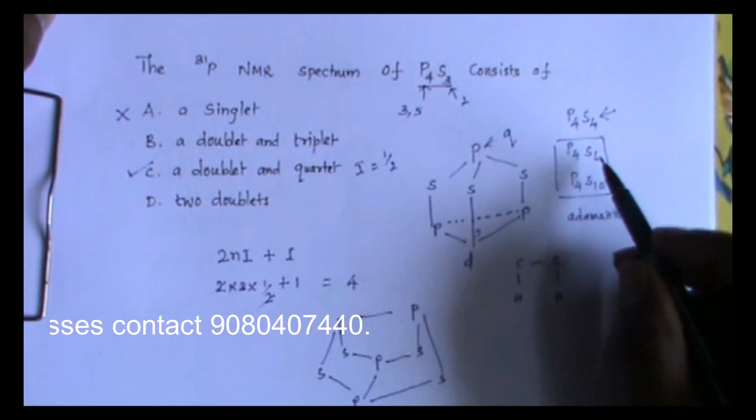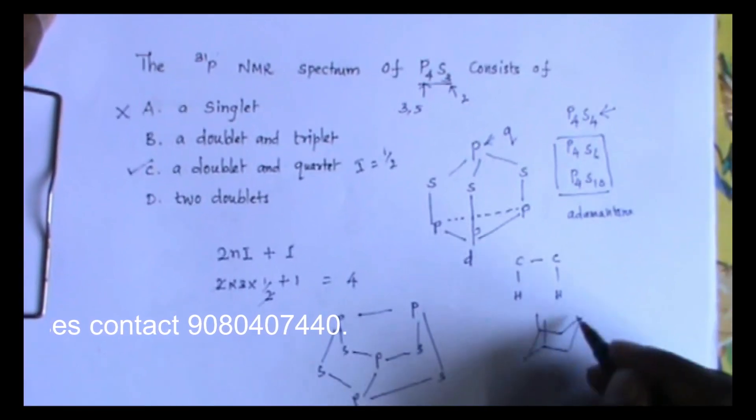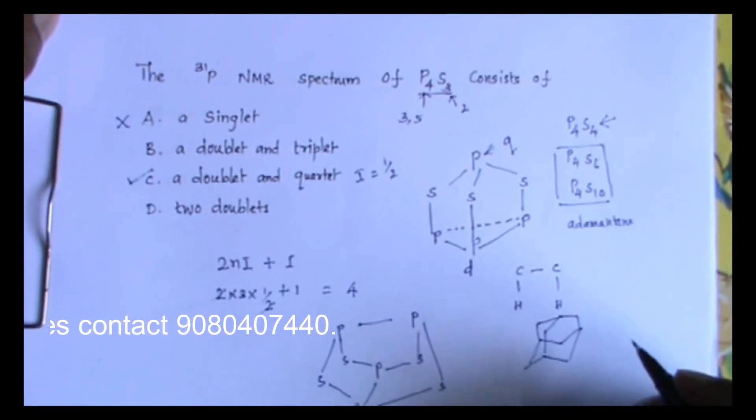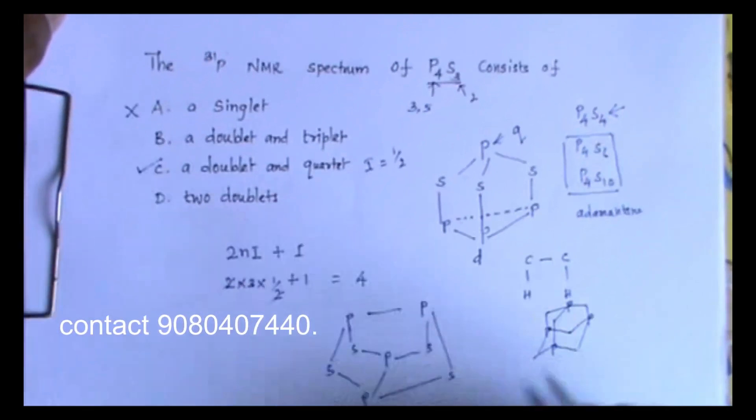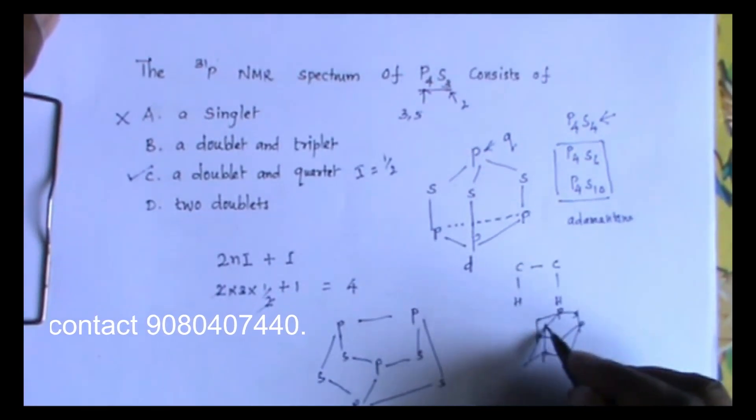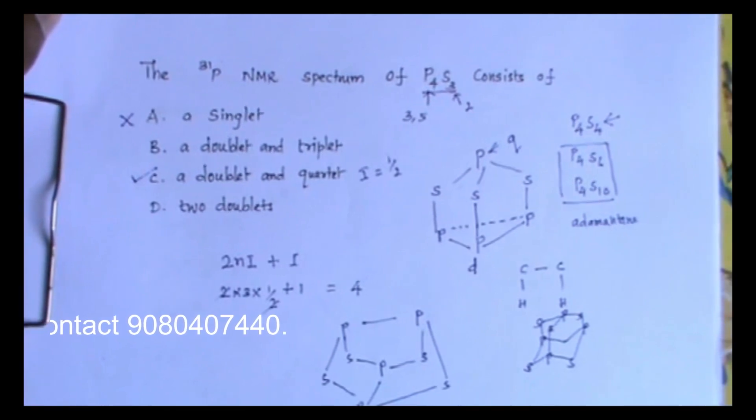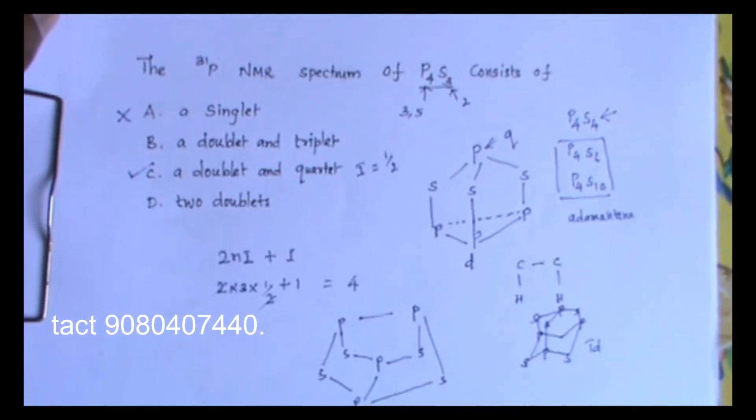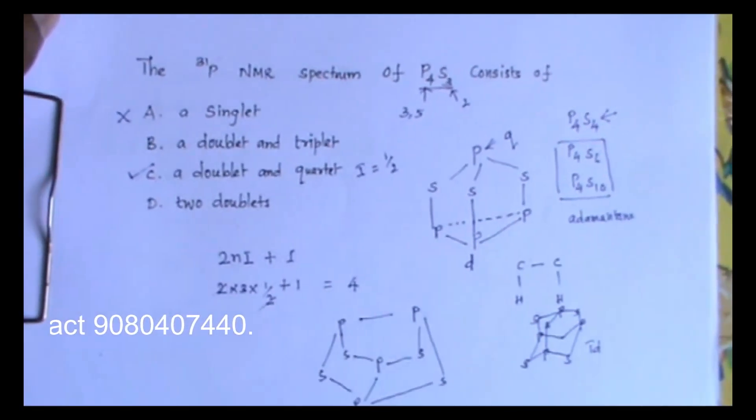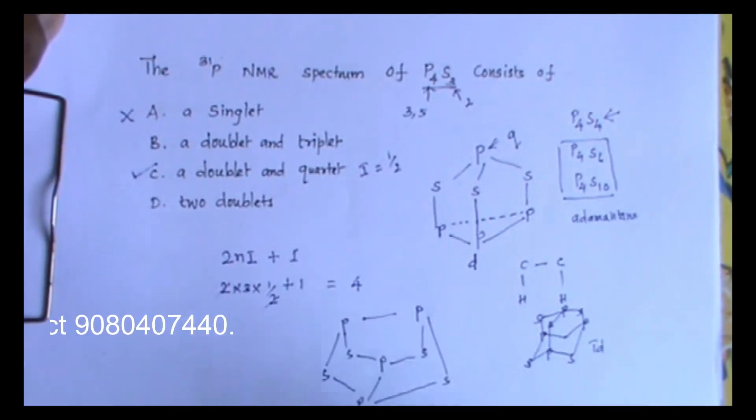What about P4S6? The structure of P4S6 will be similar to adamantane. This is the structure of adamantane. There will be four phosphorus atoms and six sulfur atoms. The point group of this compound is Td. All the phosphorus atoms are in the same environment and all the sulfur atoms are in the same environment. So for this particular compound, you can expect only one signal for phosphorus.